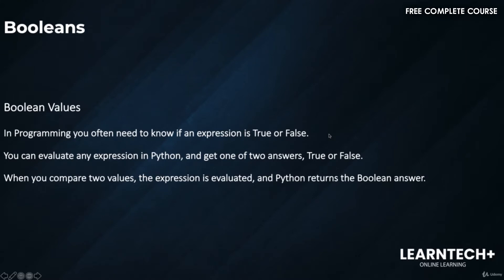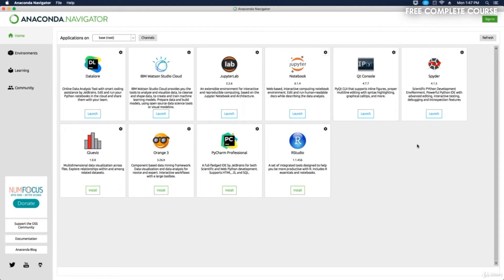Welcome back. In this video we're going to talk about booleans. Boolean values in programming — you often need to know if an expression is true or false. You can evaluate any expression in Python and get one of two answers: true or false. When you compare two values, the expression is evaluated and Python returns the boolean answer.